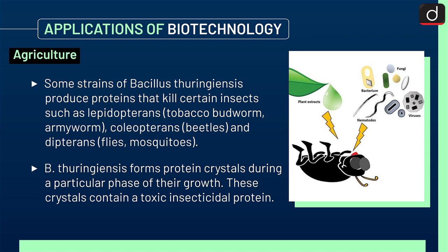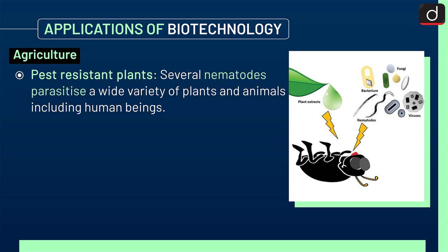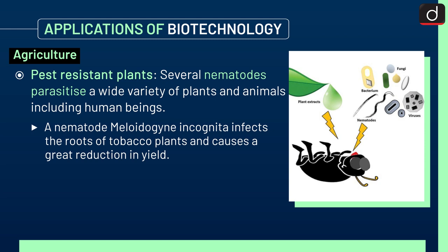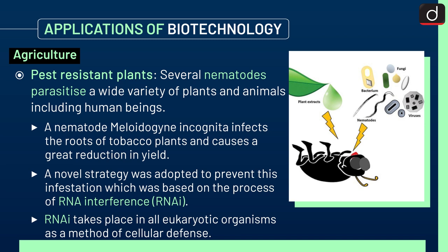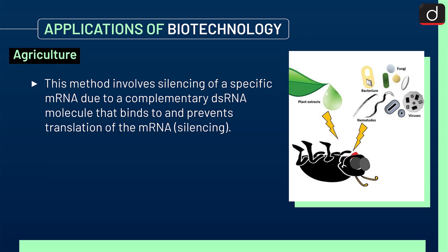Next is pest-resistant plants. Several nematodes parasitize a wide variety of plants and animals including human beings. A nematode, Meloidogyne incognita, infects the roots of tobacco plants and causes a great reduction in yield. A novel strategy was adopted to prevent this infestation, which was based on the process of RNA interference, i.e. RNAi. RNAi takes place in all eukaryotic organisms as a method of cellular defense. This method involves silencing of a specific mRNA due to a complementary dsRNA molecule that binds to and prevents translation of the mRNA.